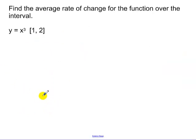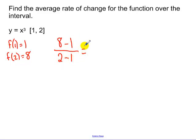So find the average rate of change of the function over the interval. Find f of 1, which is 1. Find f of 2, which is 8. So the average rate of change: subtract the y values, subtract the x values. You're finding slope.